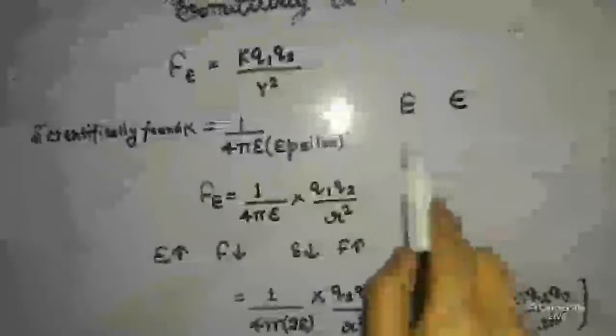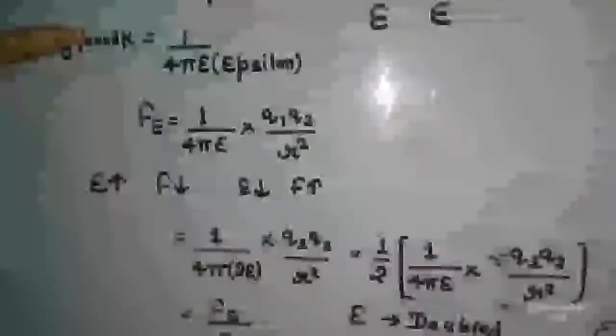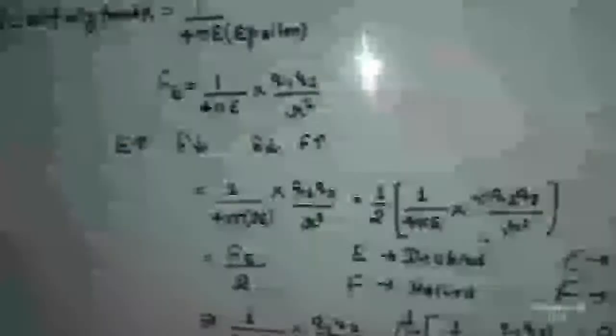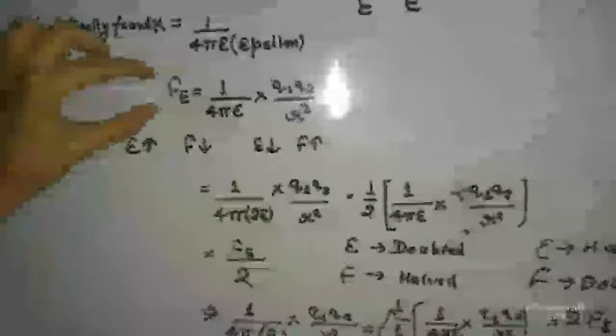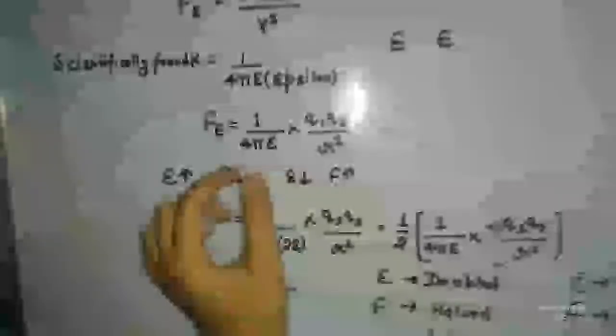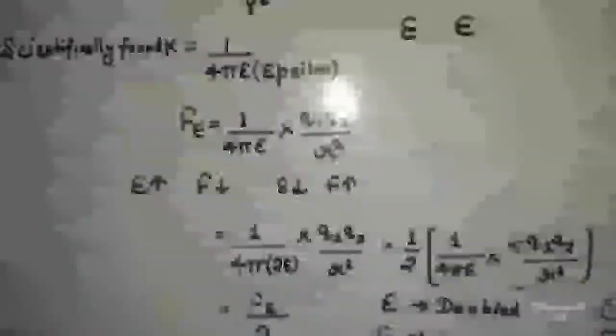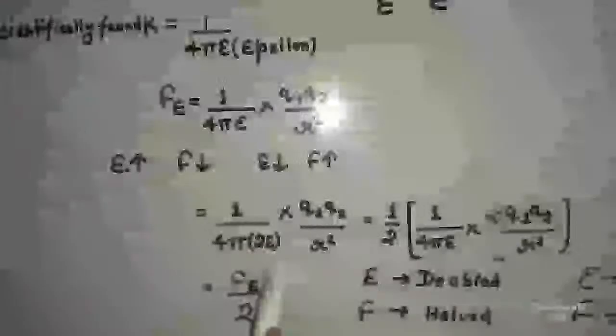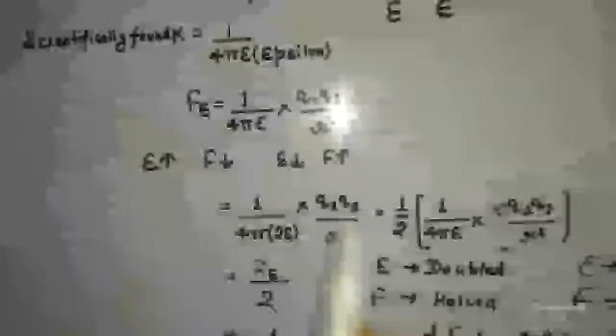So, electrostatic force is equal to K Q1 Q2 upon R squared. The value of K is scientifically found to be 1 upon 4 pi epsilon. Epsilon is represented by one of two symbols — you can use either as you wish. After putting K's value in the equation, we get Fe is equal to 1 upon 4 pi epsilon into Q1 Q2 upon R squared. Here we can see that F is in the numerator and epsilon is in the denominator, so when epsilon's value increases, F's value decreases.